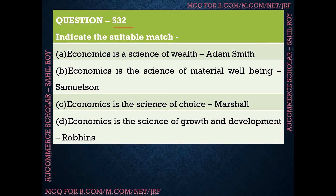Question number 532: Indicate the suitable match. Option A: economics is a science of wealth — said by Adam Smith. Option B: economics is the science of material well-being — said by Samuelson. Option C: economics is the science of choice — said by Marshall. Option D: economics is the science of growth and development — said by Samuelson. The correct answer is option A — Adam Smith said 'economics is a science of wealth.' The other three options have incorrect matches.